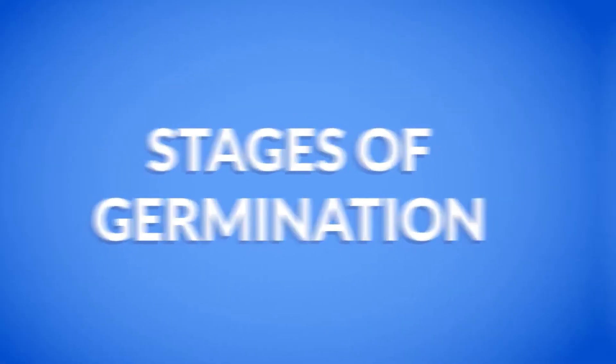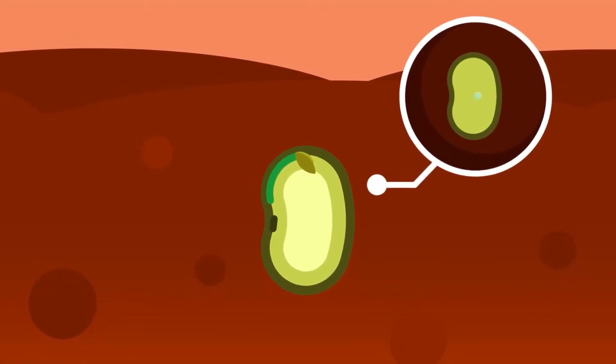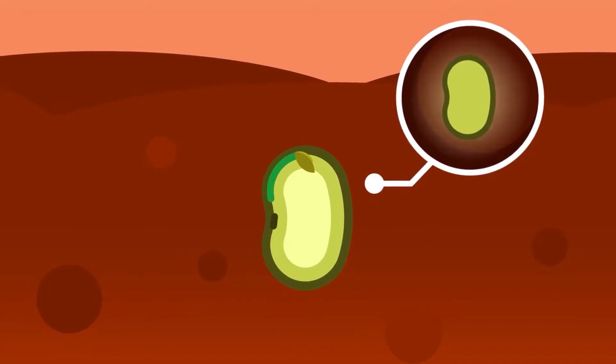Stages of germination. There are three main stages of germination: the imbibition of water, increased metabolic activity, and swelling of cells.